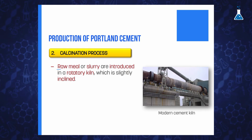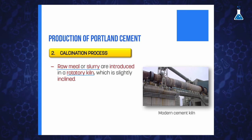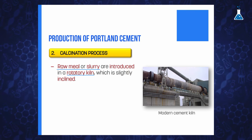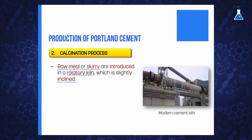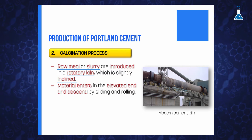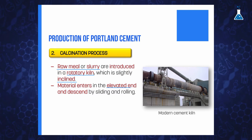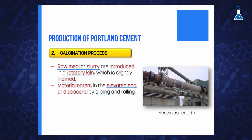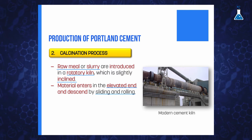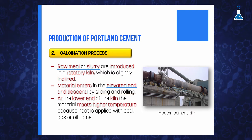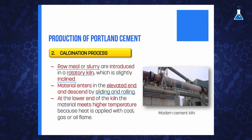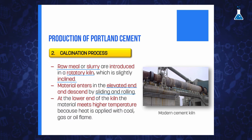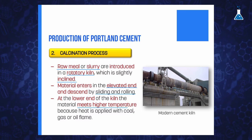The next step in the production of Portland cement is to transfer the raw meal or slurry to a rotary kiln made of steel and lined inside with fire bricks. The kiln is slightly inclined from the horizontal; materials enter at the elevated end and move down by sliding and rolling, induced by the rotation and inclination of the kiln. At the lower end, heat is applied with coal, gas, or oil flame, so as the material moves forward it meets higher temperatures.